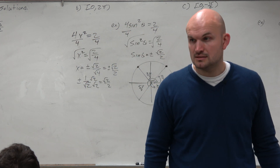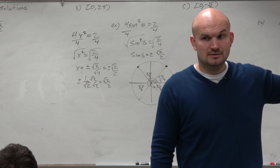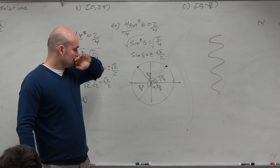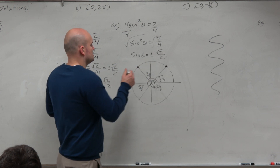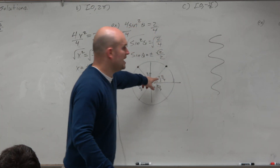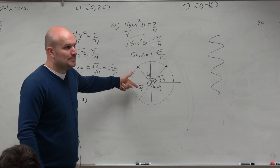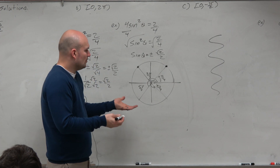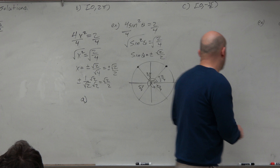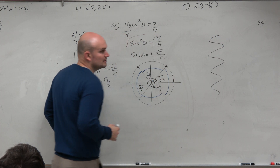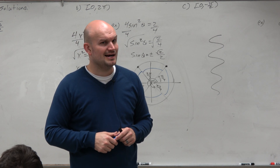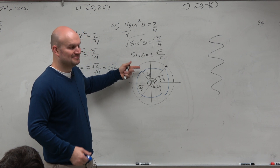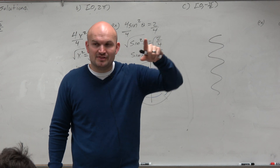Do you guys see that all of these angles are equidistant from each other? How far are they away from each other? Pi halves, right? All the way around the circle is 2 pi, halfway is pi, half of that is pi halves. So could we just start with the smallest positive angle and then add pi halves? Pi over 4, plus pi halves, plus pi halves, plus pi halves, plus pi halves — we hit every single solution by adding pi halves n.